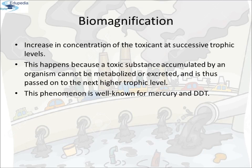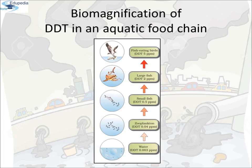Biomagnification: A few toxic substances often present in industrial wastewater can undergo biological magnification, or biomagnification, in the aquatic food chain. Biomagnification means the increase in the concentration of a toxicant at successive trophic levels. This happens because a toxic substance accumulated by an organism cannot be metabolized or excreted and is thus passed on to the next higher trophic level. This phenomenon is well known for mercury and DDT. This is the diagrammatic representation of the biomagnification of DDT in an aquatic food chain.